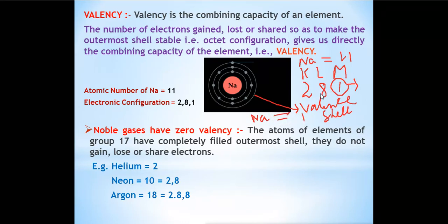Valency is of two types: positive and negative. If an atom loses electrons, it has a positive valency. Sodium loses one electron so it has a positive valency of +1. If an element gains electrons, it has a negative valency. For example, chlorine has seven electrons in its outermost shell; it will gain one electron to complete its octet, so it has a valency of −1.